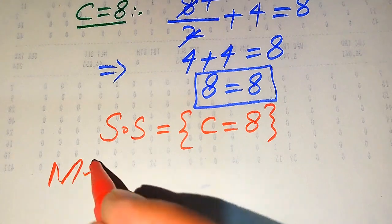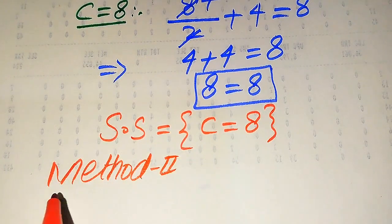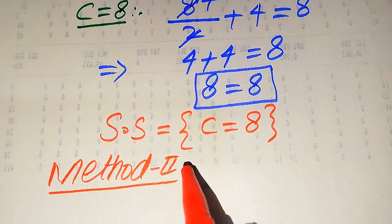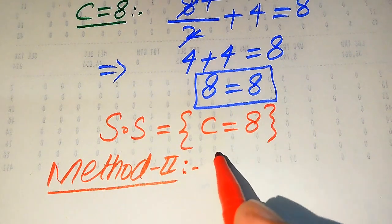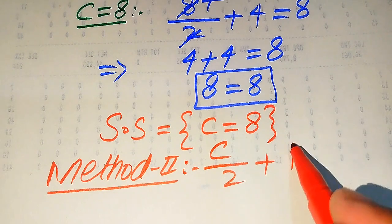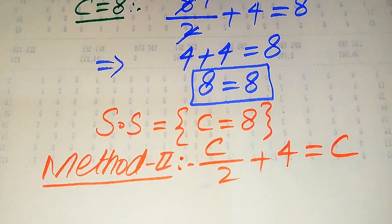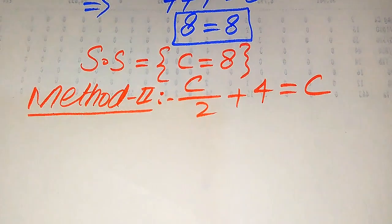Now we solve this problem using the second method. We copy down the given equation: C divided by 2 plus 4 equals C. In the second method, we first move the variable terms to the right hand side.